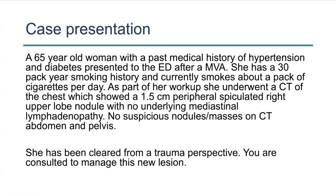You get a 65-year-old woman with a past medical history of hypertension and diabetes who presented to the ED after an MVA. She has a 30-pack year smoking history and currently smokes about a pack of cigarettes per day. As part of her workup, she underwent a CT of the chest which showed a 1.5-centimeter peripheral spiculated right upper lobe nodule with no underlying mediastinal lymphadenopathy. No suspicious nodules or masses on CT of the abdomen and pelvis were seen. She has been cleared from a trauma perspective and you are consulted to manage this new lesion.